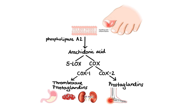Now that we've discussed the role of COX enzymes in the inflammatory response, let's talk about the mechanism of action of NSAIDs. NSAIDs act primarily by inhibiting COX enzymes, which leads to decreased production of prostaglandins. As a result, NSAIDs produce anti-inflammatory, antipyretic, and analgesic effects.